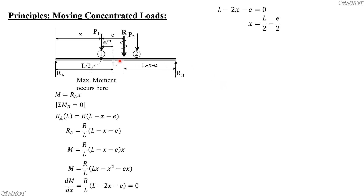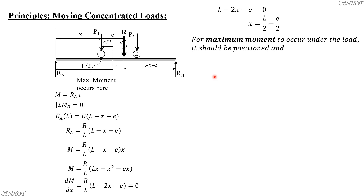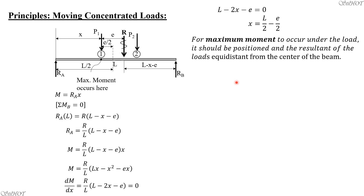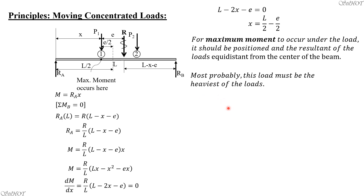Having derived the positioning of live loads for maximum moment: the maximum moment occurs under the load when P1 and the resultant R are equally spaced from the center of the beam — in between P1 and R should be the center of the beam. For maximum shear, either RA or RB is maximum when the heaviest load is positioned over the support reaction, with the rest of the loads on the span.